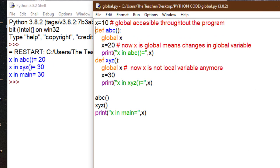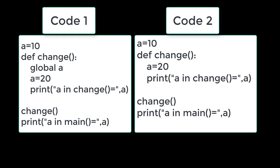Quiz time! Two codes are displayed: code 1 uses the `global` keyword — `global a` — and code 2 does not use a global keyword. The rest of the code is the same. What is the output after running each code? Answer in the comment box. Thank you.